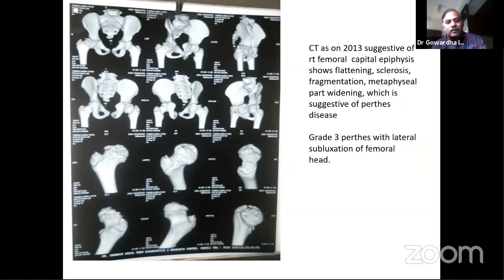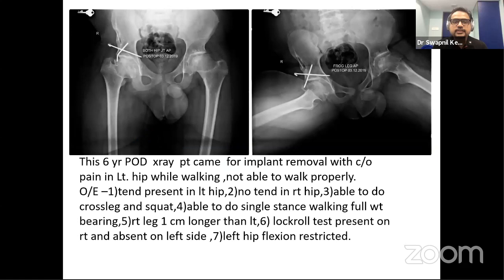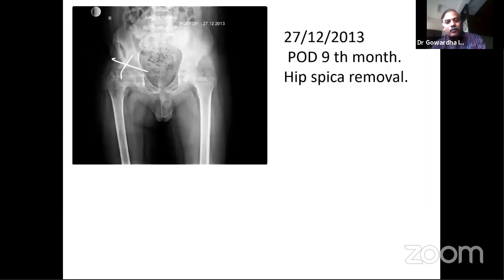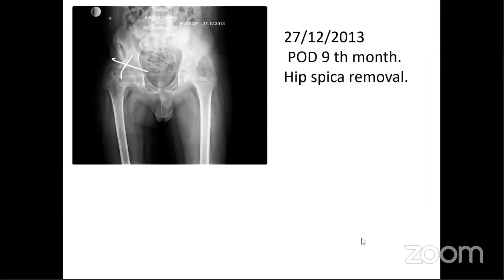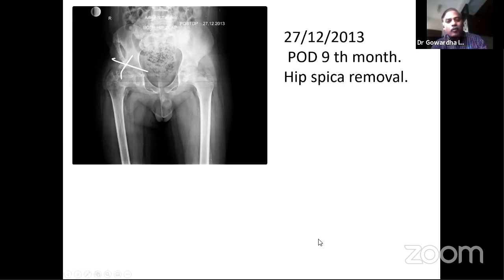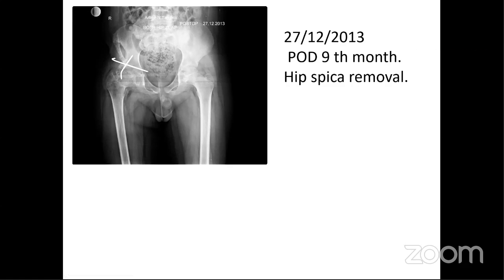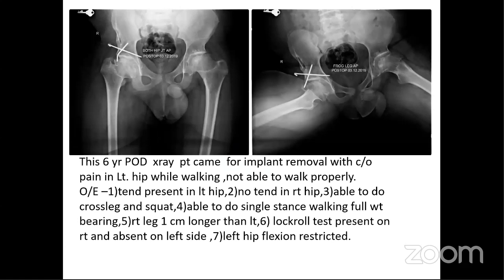Perthes is bilateral in quite a few cases and may start at different times. If both hips are simultaneously involved in a short-stature child, spondyloepiphyseal dysplasia is likely. In this case involvement at different times suggests this is indeed bilateral Perthes. This person may be at risk — nowadays there are genetic studies being done to identify a person at risk for Perthes, though it is not a strictly genetic disorder.